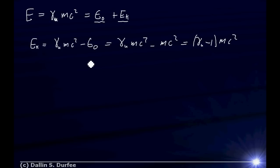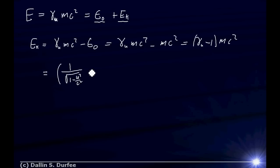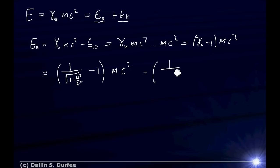That's what I'm looking for, and it's as simple as plugging things in. γ_u is just 1 over the square root of 1 minus u² over c². And u is the final velocity, half the speed of light, minus 1, times the mass of the proton times c². So u over c is just one half, giving us 1 over the square root of 1 minus 0.5 squared, minus 1.